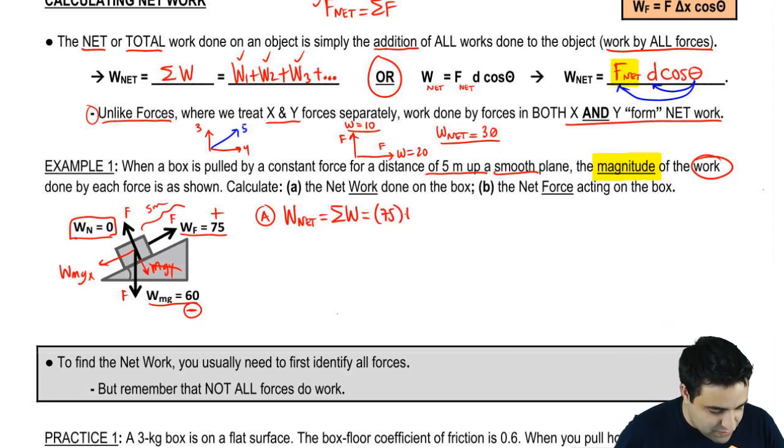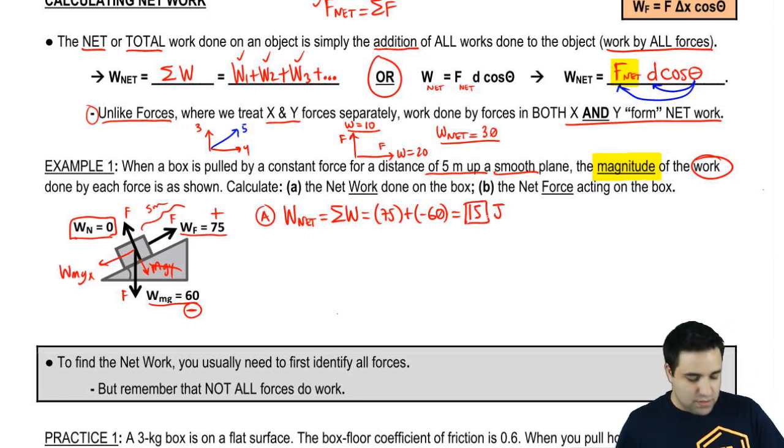So when you combine these, it's not 75 plus 60, but it's 75 plus negative 60, or 75 minus 60, and the answer is 15 joules. So you do have to realize that this number is a negative, very important.